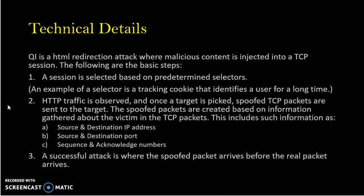Technical details. QI is an HTML redirection attack where malicious content is injected into a TCP session. The basic steps of a QI attack are as follows. First, a session is selected based on predetermined selectors — an example of a selector is a tracking cookie that persistently identifies a user for a long time. Second, HTTP traffic is observed, and once a target is identified, spoofed TCP packets are sent to that target. The spoofed packets are created based on information gathered from the victim's TCP packets, including source and destination IP address and port, and the sequence and acknowledge numbers.